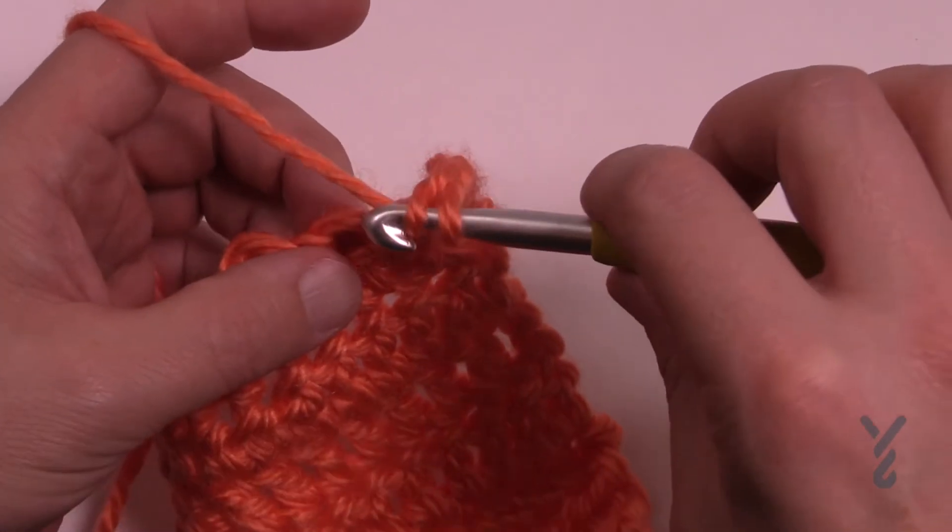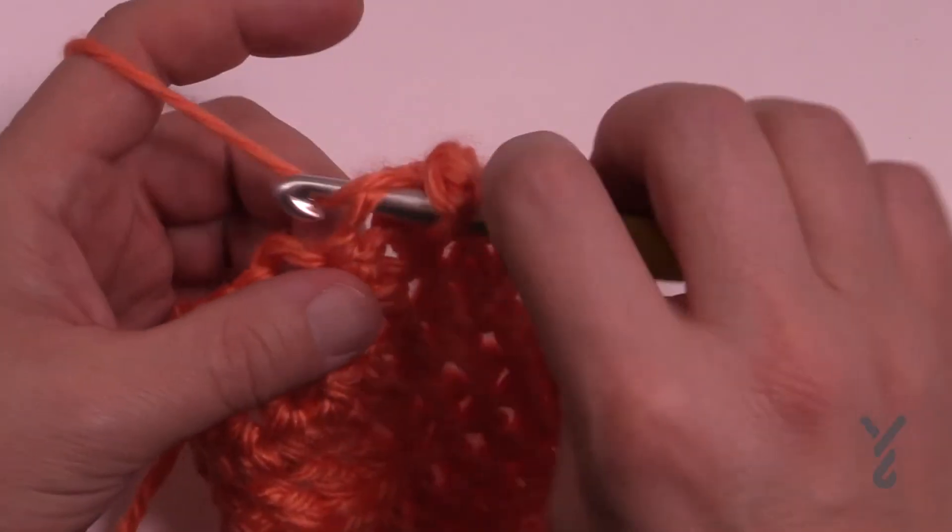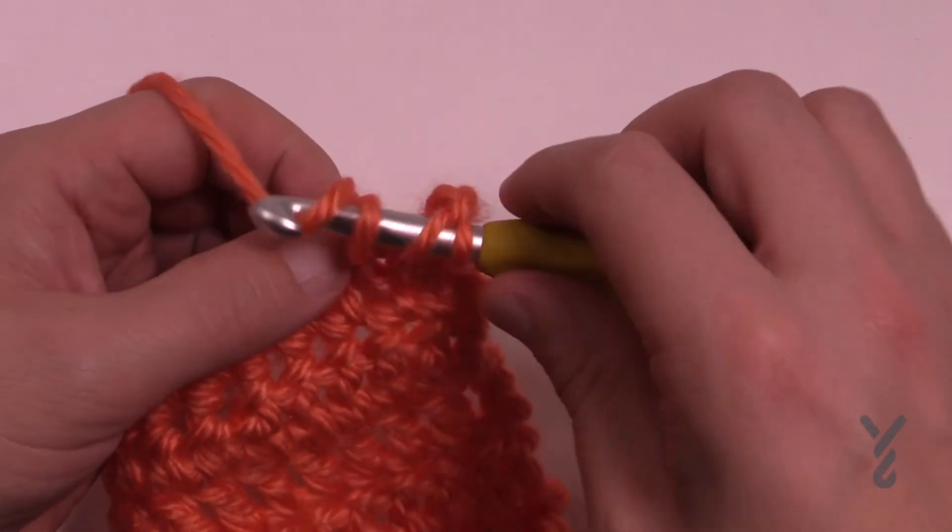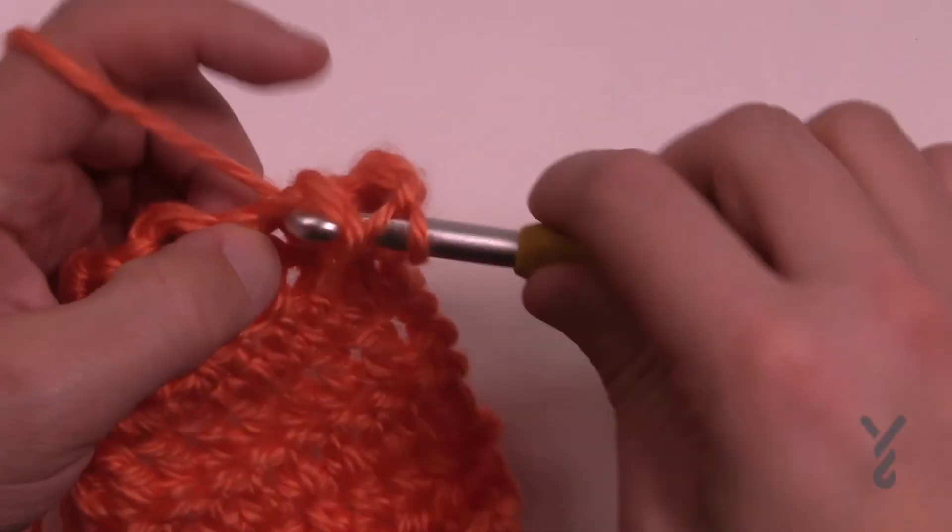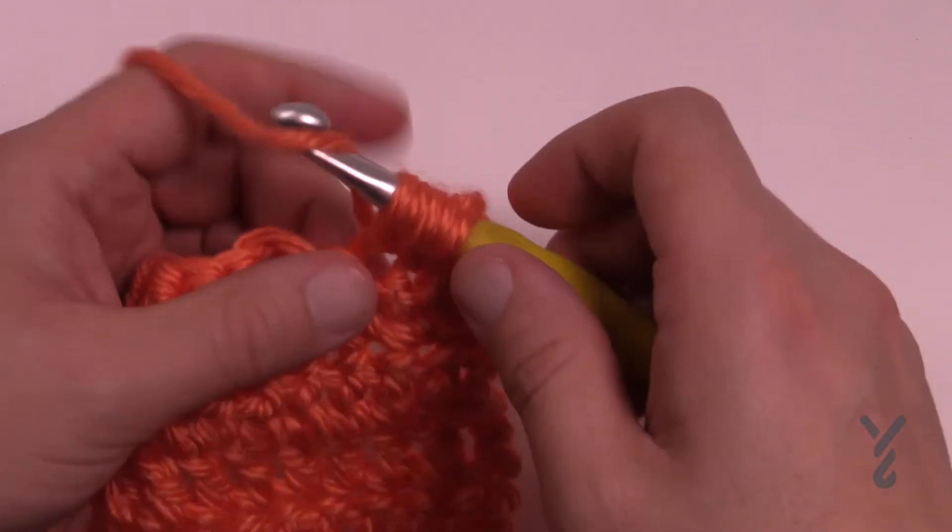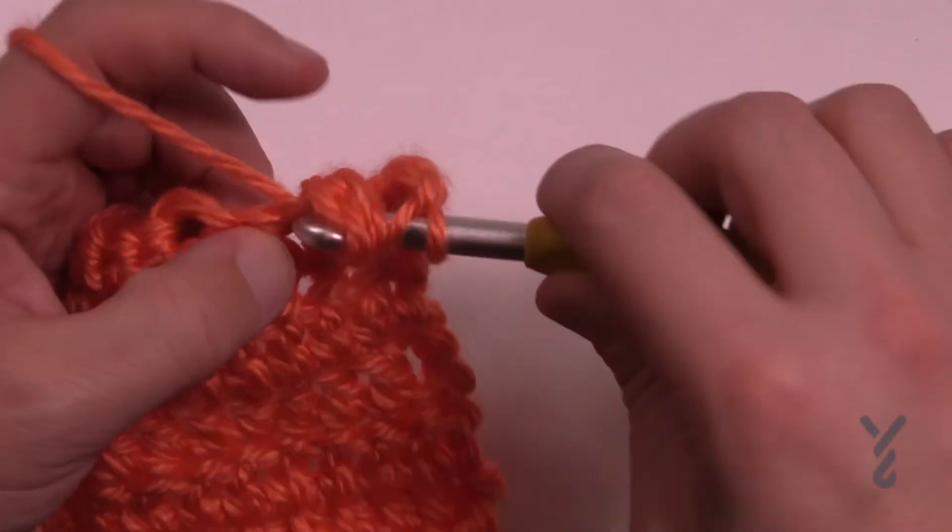So we're just gonna wrap the hook and go into the same stitch, pull through and then we're gonna wrap the hook again and go into the same stitch, pull through and then wrap one more time in the same stitch. So there is your three.